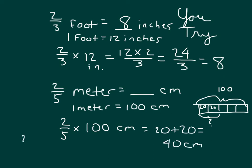Now, you might have gone 2 times 100 equaling 200 divided up by 5 to also get 40 centimeters. But remember, there is always more than one way to think about and to look at a problem. Two-fifths of a meter does equal 40 centimeters. And two-thirds of a foot does equal 8 inches.